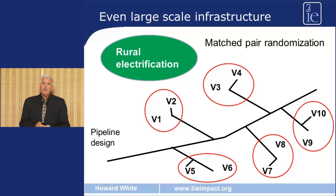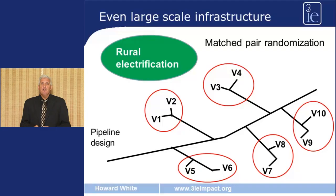This is what we call a pipeline design, because we are connecting one of each pair to the grid for now, but in the future we will also extend the grid to the second village in each pair. That's an example of a randomised rollout, where we've randomised the order in which different eligible communities get access to the infrastructure.